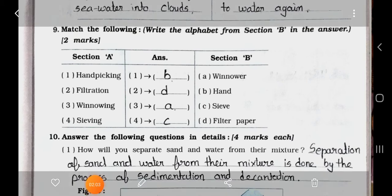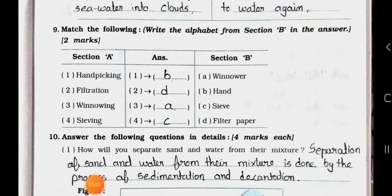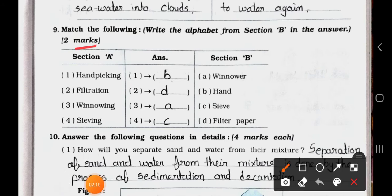Now see main 9: Match the following. Write the alphabet from section B in the answer. It carries 2 marks. Section A and section B. First of all, we will see section A.